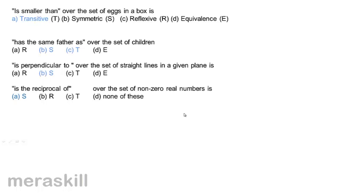Similarly, consider 'is a cousin of'. If A is a cousin of B, then B is also a cousin of A. But if A is a cousin of B and B is a cousin of C, C need not be the first cousin of A — they could be second cousins from different sides of the family. So among cousins, only symmetry exists; transitivity does not necessarily hold.